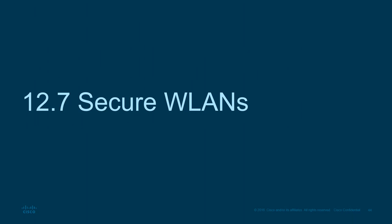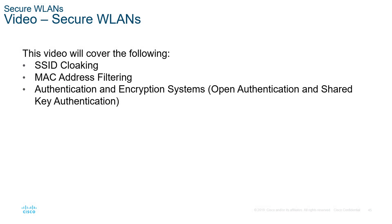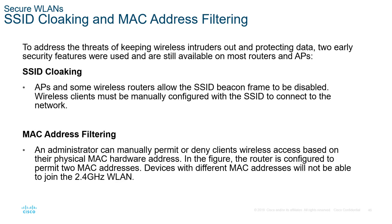To secure wireless networks, common approaches include SSID cloaking, MAC address filtering, and authentication and encryption. SSID cloaking disables the SSID beacon frame, but most modern wireless scanning tools can still detect the SSID, so it's better than nothing but not fully secure. MAC address filtering restricts network access to known MAC addresses, though it becomes difficult to manage as the network grows.